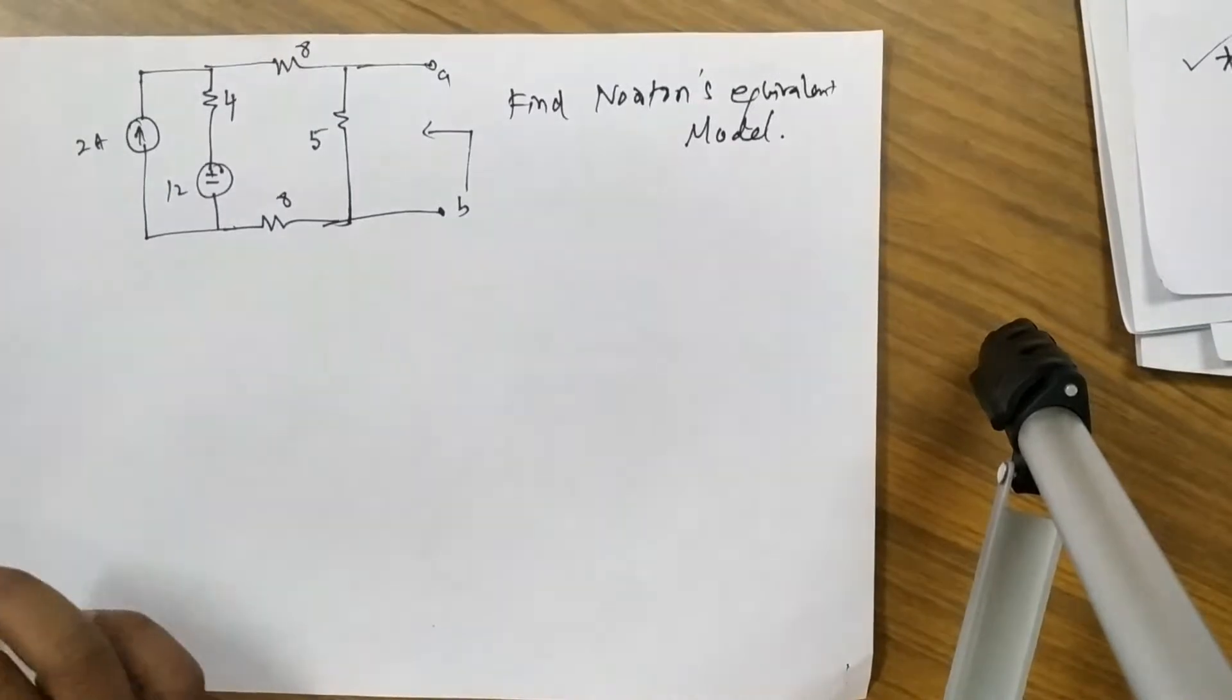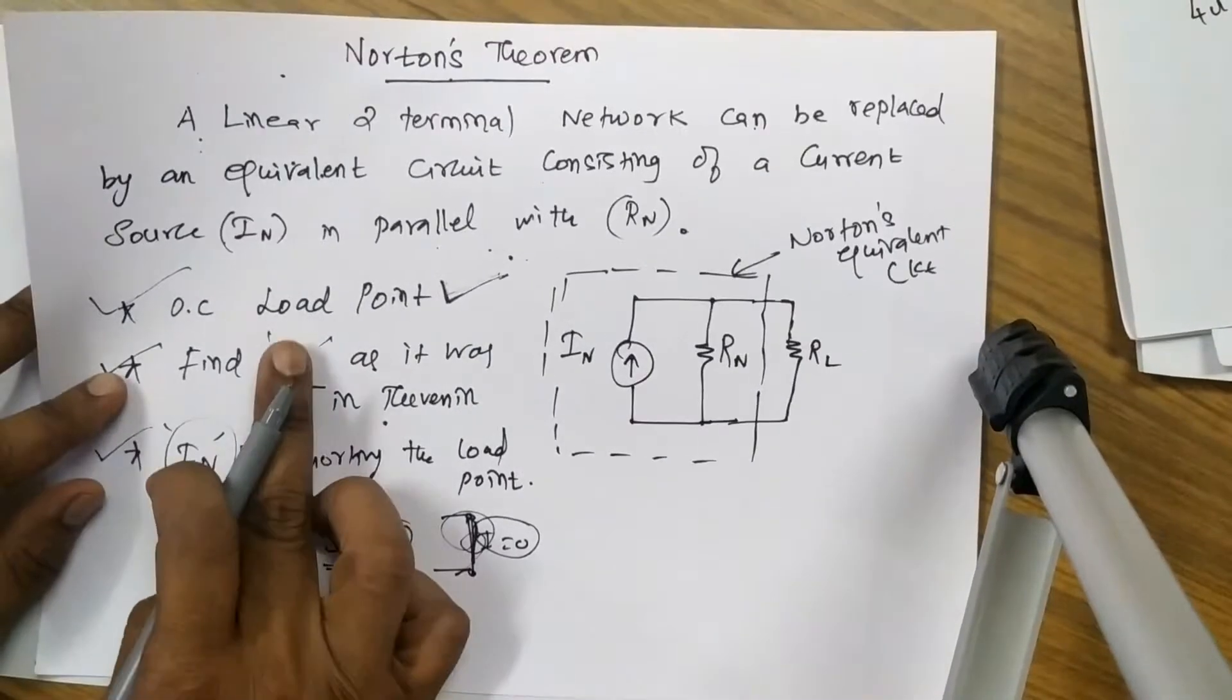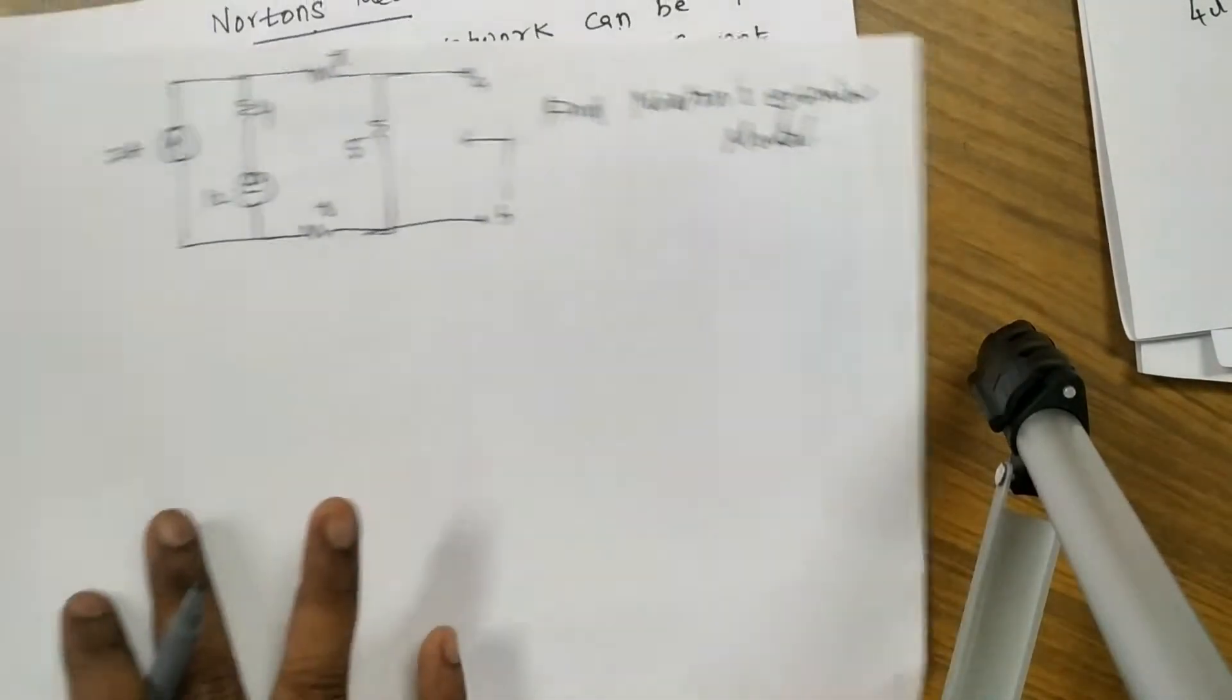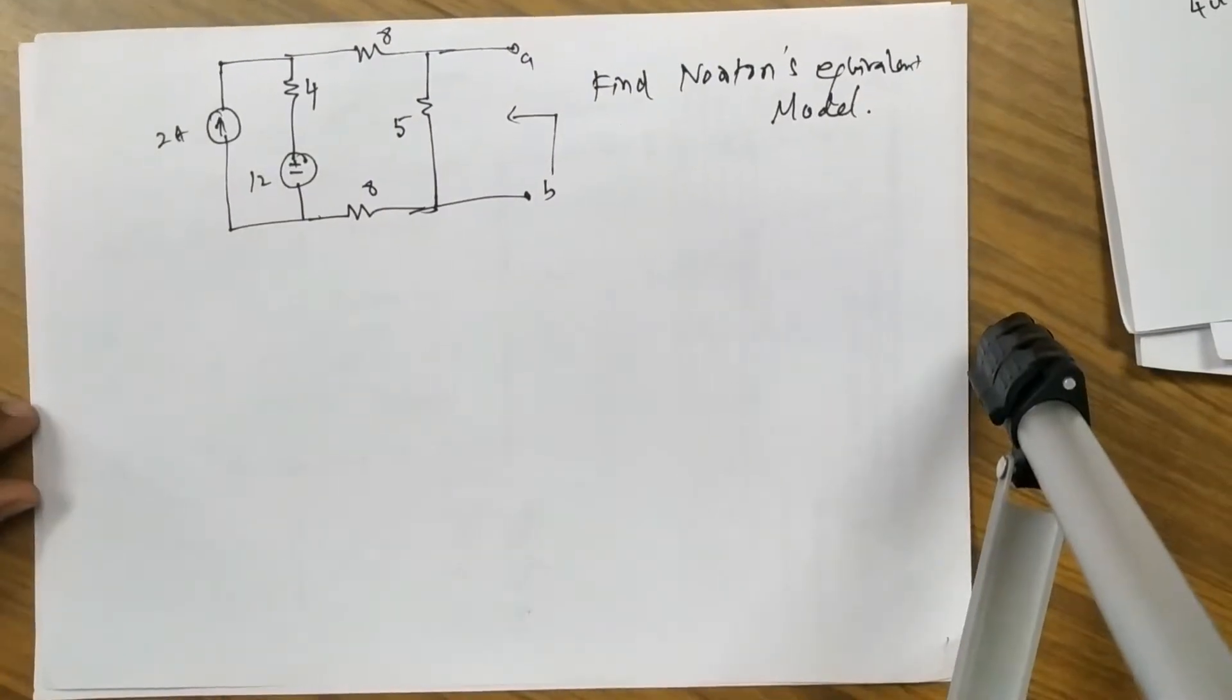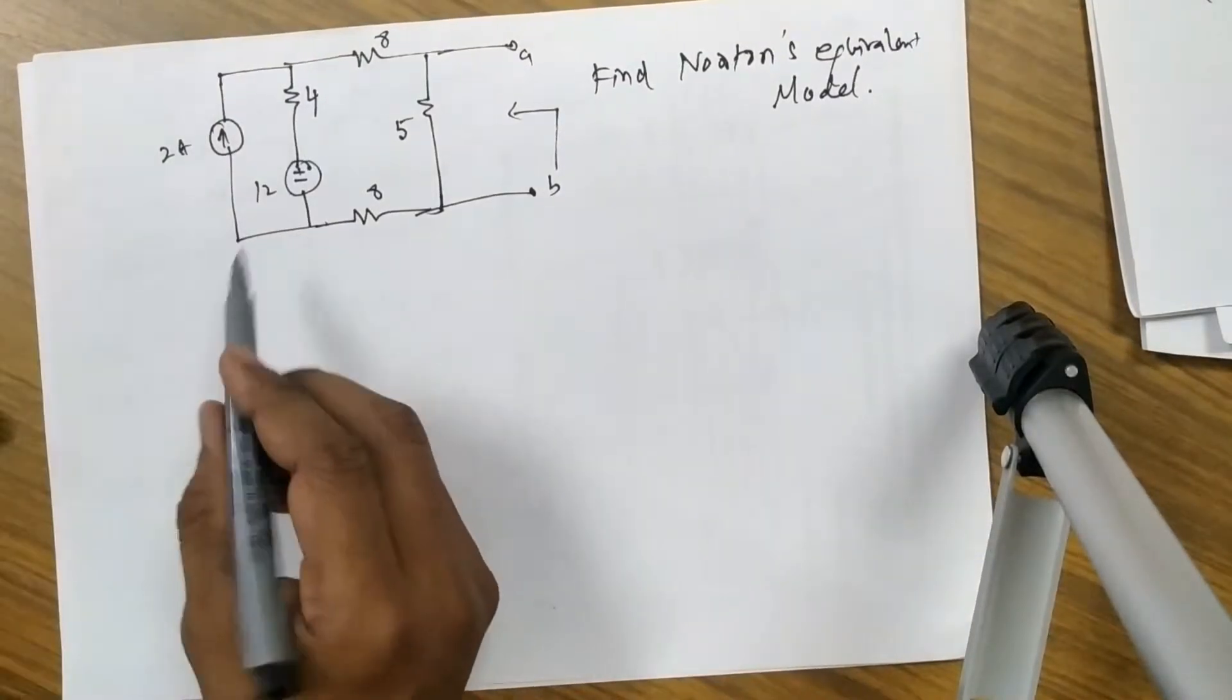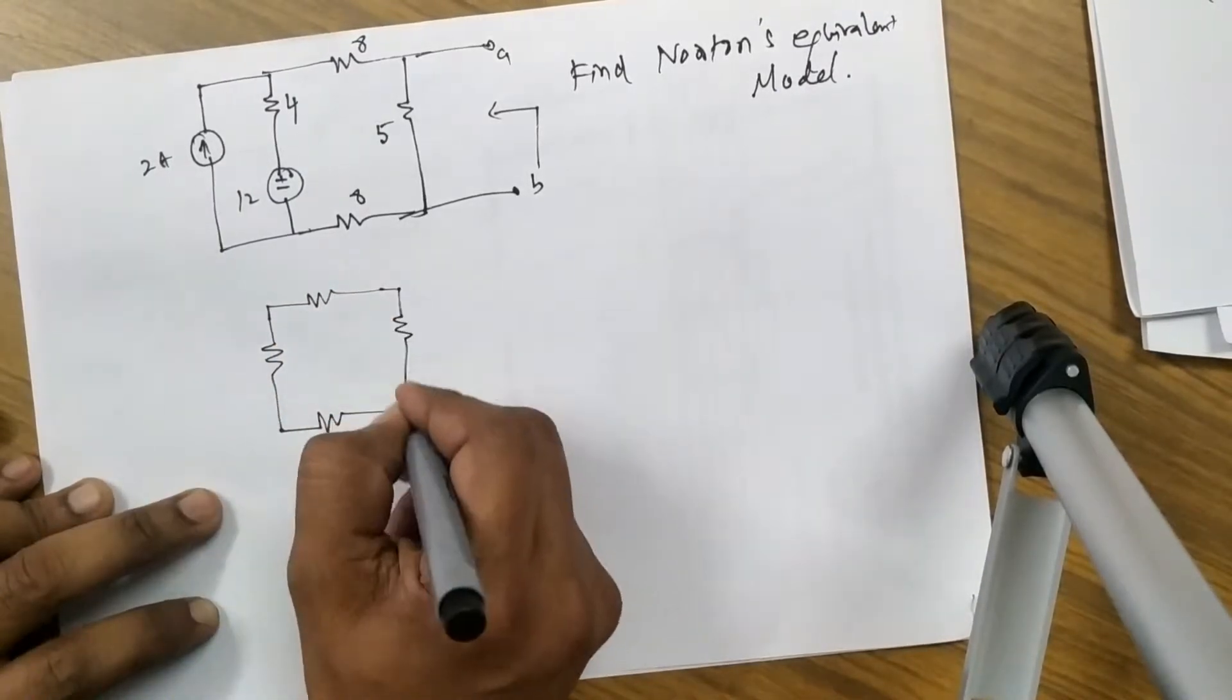So how to get Norton's equivalent model? As I said, the first procedure to find out the Rth, it is similar to V Thevenin. So we can have the same procedure what we followed in the V Thevenin to get the Rth value. So to get that, open circuit the current source, short circuit the voltage source, you will get a circuit like this.